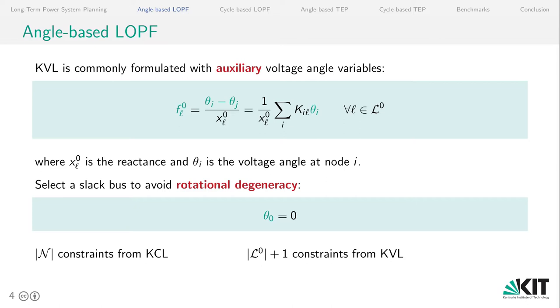So in total for the angle-based LOPF, we have N constraints from the KCL, Kirchhoff's current law. And additionally, we have L plus 1 constraints from KVL. So for each line and an additional for the slack bus.